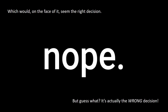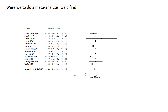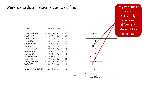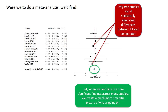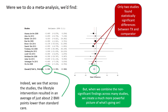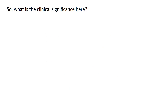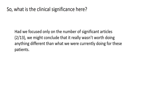Taking change in BMI as our primary outcome of interest, we extracted the data and found that only two of the 13 studies found statistically greater improvement in BMI for multi-component weight management programs than standard care. Imagine you were in charge of deciding whether to go to the work and expense of instituting a program of this sort in your clinic. You'd say no, right? And on the face of it, that would seem to be the right decision. But guess what? It's actually the wrong decision. Were we to do a meta-analysis, we'd find that only two studies found a significant difference — notice the whiskers don't cross the line of no difference. But when we combine the non-significant findings across many studies, we create a much more powerful picture of what's going on. Had we focused only on the number of significant articles — two out of thirteen — what we call vote counting, we might conclude it really wasn't worth doing anything different from what we were currently doing with these patients.